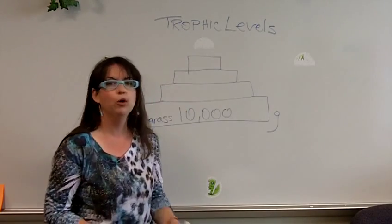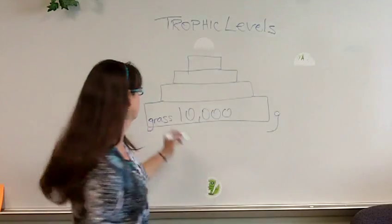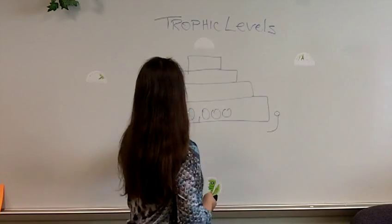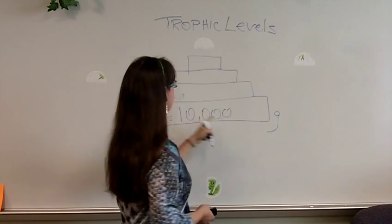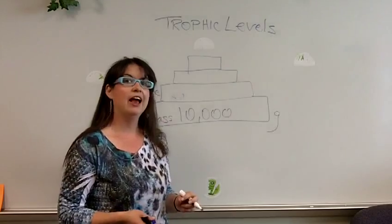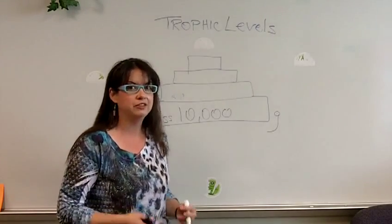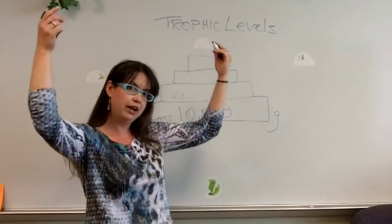The next trophic level up, what eats grass? Let's say a mouse eats grass. So the mouse is over here and you lose 90% of your energy as heat as you eat up the food chain. So it's actually really inefficient to eat really high up on the food chain.